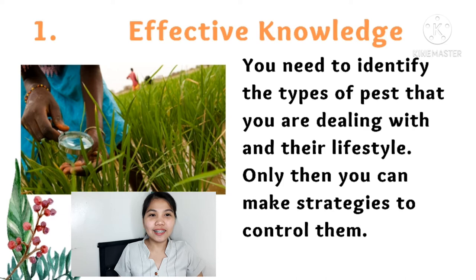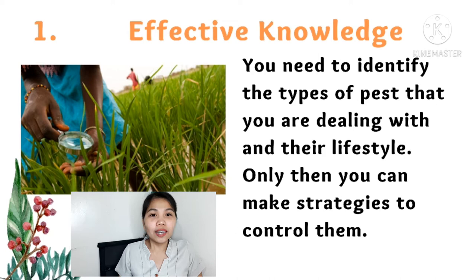You need to identify the types of pests that you are dealing with and their lifestyle. Only then can you make strategies to control them. It is considered a method because in order to kill and control certain pests, you need to know first the nature of the pests and their lifestyle. With that knowledge, you can easily control and stop the infestation.